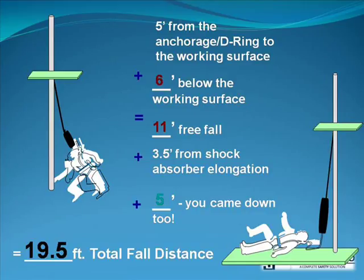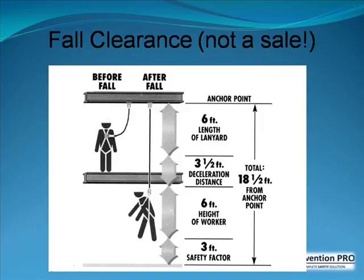Adding 3.5 feet from shock absorber elongation and 5 feet for worker height, the total fall distance is 19.5 feet — meaning you would hit the surface. To avoid this, calculate fall clearance and choose the anchorage point above your head. With the anchorage above your head: 6 feet lanyard length, 3.5 feet deceleration clearance, 6 feet worker height, and a 3-foot safety factor.